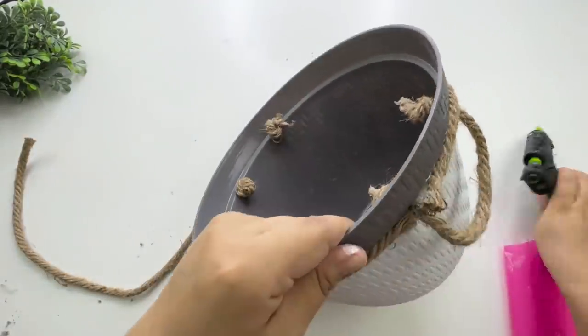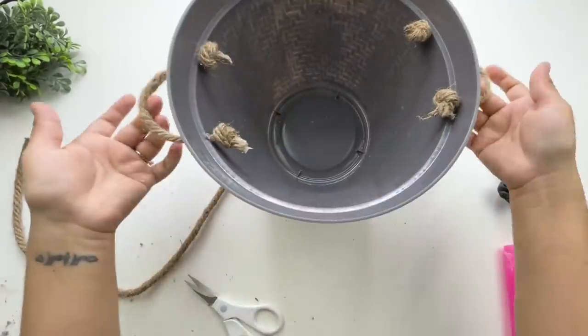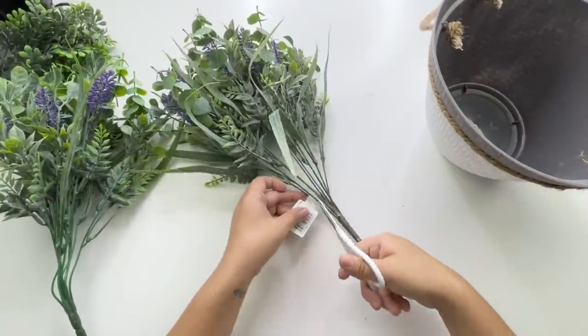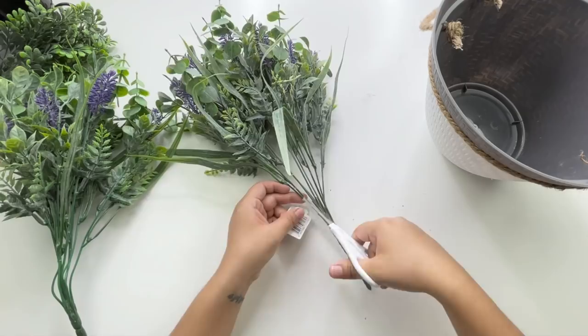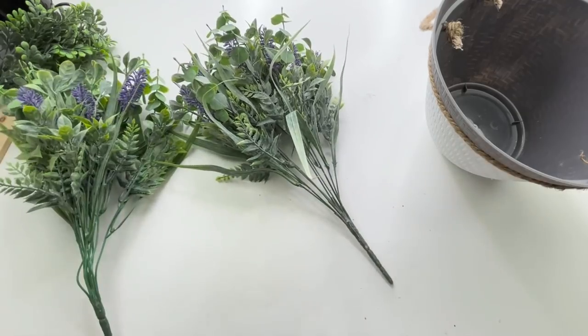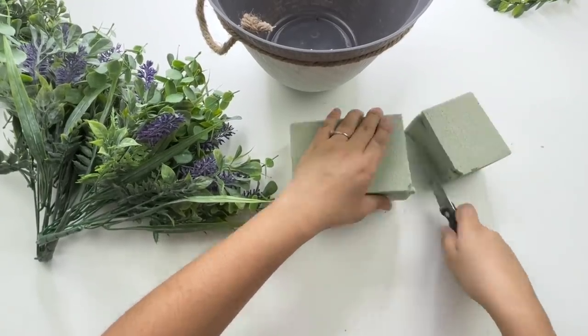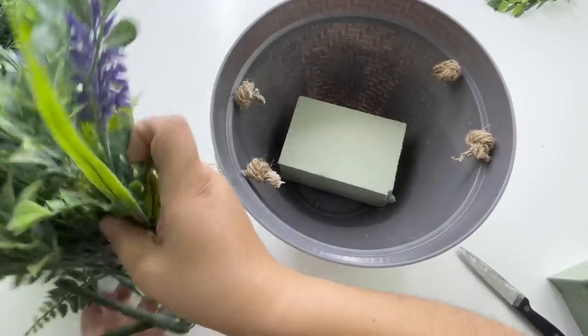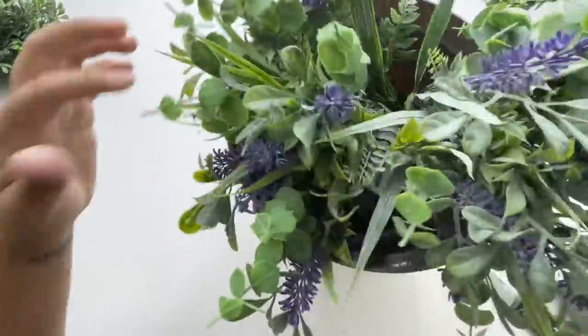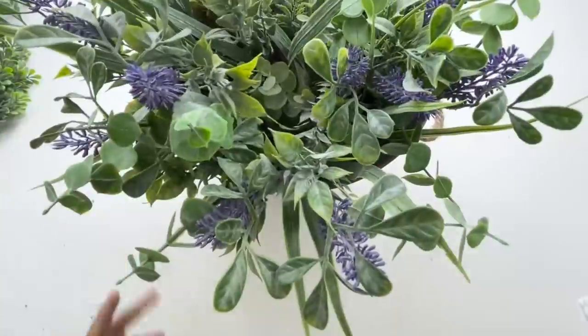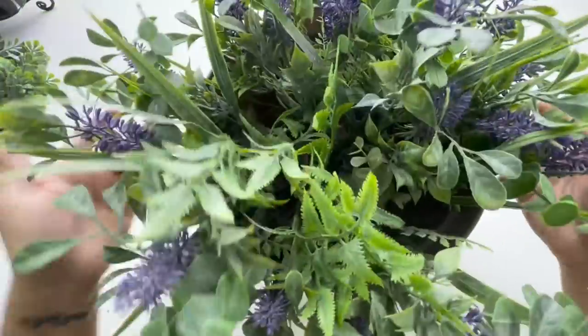For the greenery, I will be using these two beautiful lavender picks that I got from Walmart. They were $3.47 each. I will be adding some floral foam just because this planter is pretty big and I don't want my greenery to get lost inside the planter. And that is it for this gorgeous planter.